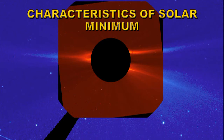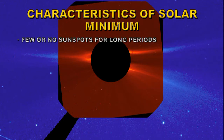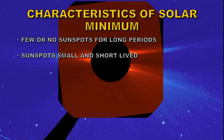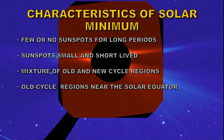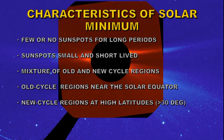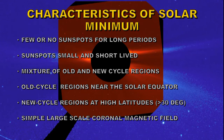So what are the most obvious characteristics of solar minimum? Well, obviously there have to be few or no sunspots for long periods of time. The sunspot groups themselves are small and short-lived. There's a mixture of old and new cycle regions on the Sun — the old cycle appearing somewhere near the solar equator and the new cycle regions at high latitude, say above 30 degrees. Also, if you look at the outer corona of the Sun it has a relatively simple structure.